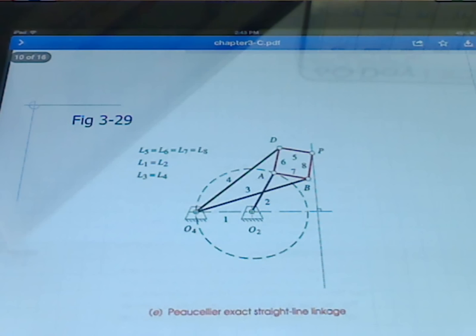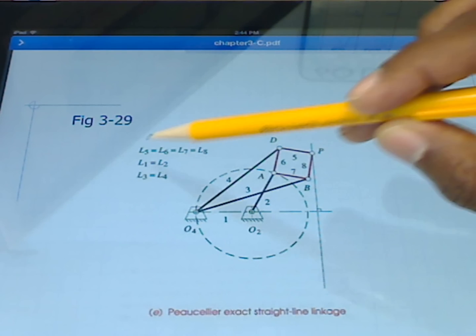We see to generate this perfectly straight line, we need eight links. And these four here, the coupler point being there, all have the same length as shown here. L1 and L2 also have the same length.